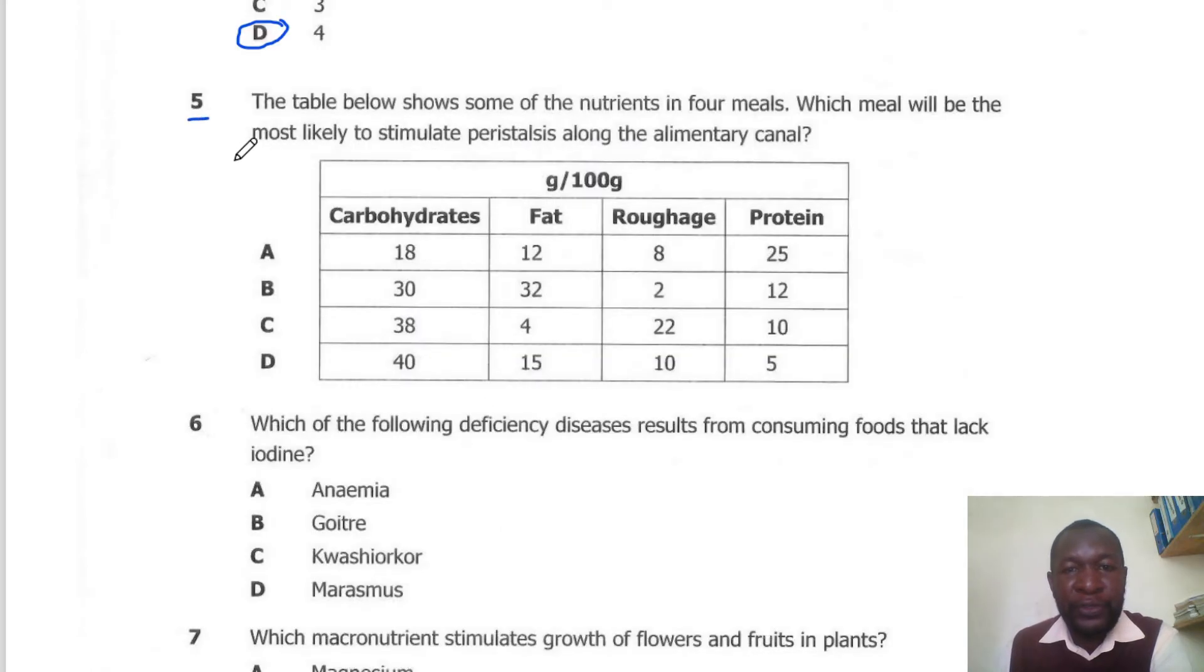Question 5. The table below shows some of the nutrients in four meals. Which meal would be most likely to stimulate peristalsis along the alimentary canal? For peristalsis to occur, you need a lot of roughage. So here the correct answer is C, which has 24, the highest amount of roughage.